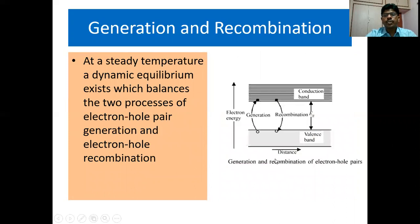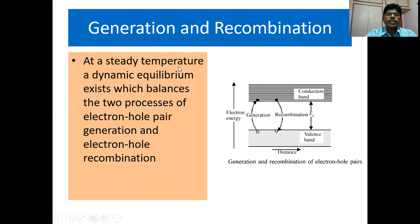This picture shows what is generation and recombination. When sufficient energy is given, bonds will break in the valence band and the electron jumps from the valence band to the conduction band. When it collides with another particle in the conduction band, the electron will lose energy, come back to the valence band, and combine with the hole. At a steady temperature, a dynamic equilibrium exists which balances the two processes of electron-hole pair generation and electron-hole pair recombination.